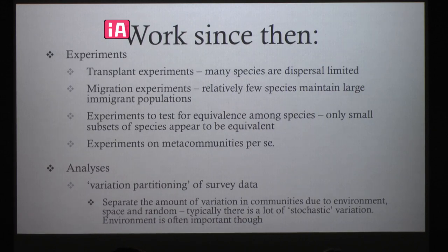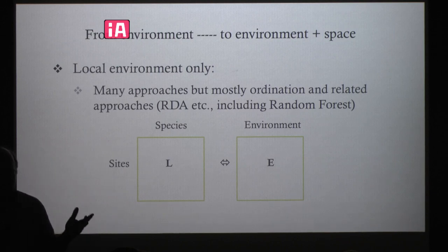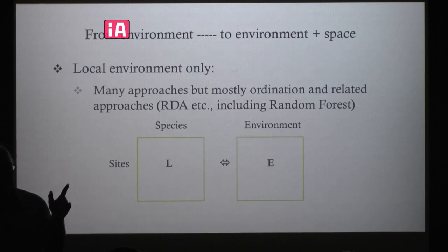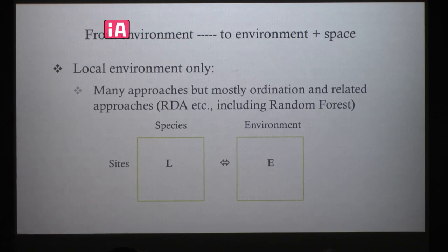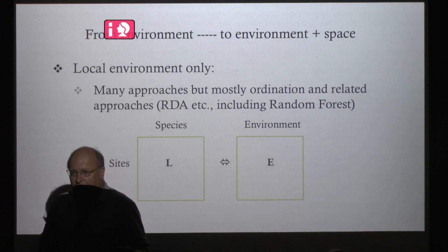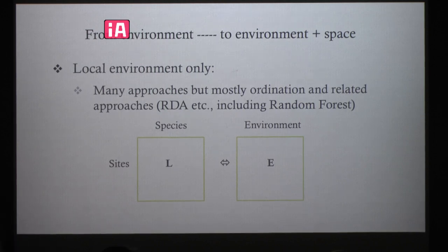The idea behind variation partitioning is a statistical one. If we have a site-by-species matrix — imagine going to all these ponds in Siberia and recording which species are at each one — we can try to explain that variation in different ways. Until thinking about metacommunities, the main way people explained that kind of variation was by linking it to purely environmental variables. Some species like high pH, some like low pH, and they distribute themselves across sites according to those proclivities. That tradition corresponds well to the species sorting view but would be pretty useless for the other perspectives.